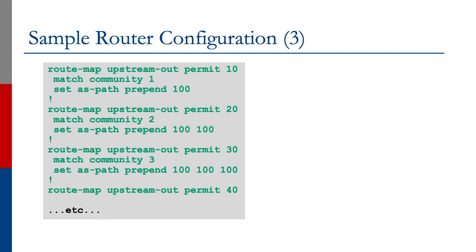For the upstream outbound route map — upstream-out, permit 10 — for community list 1 we prepend once: set AS-path prepend 100. For community list 2 we prepend twice: set AS-path prepend 100 100. For community list 3 we prepend three times: set AS-path prepend 100 100 100. This is a quick way to implement the policy described in the previous slides.